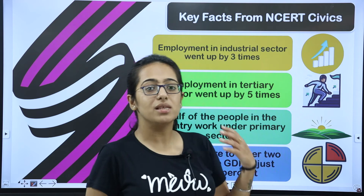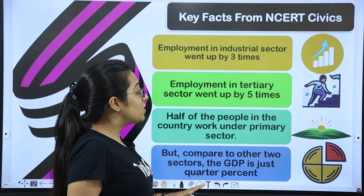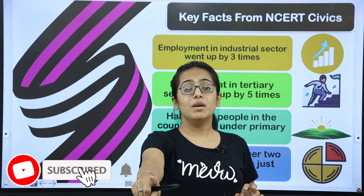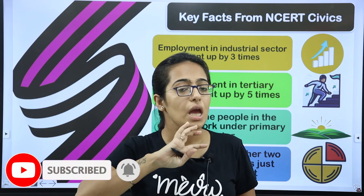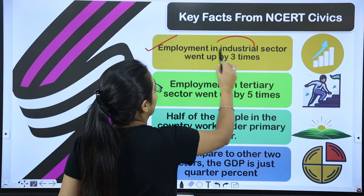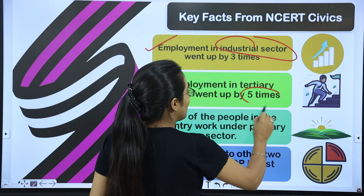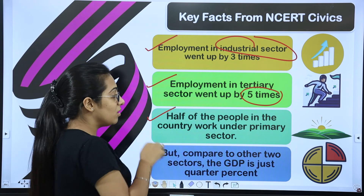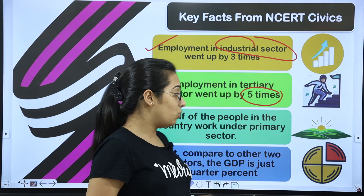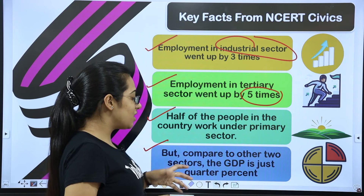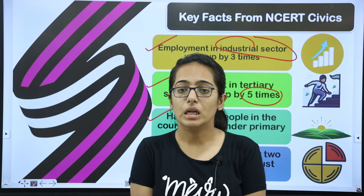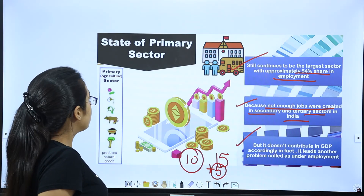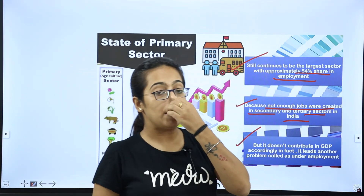Some key facts from NCERT: the industrial sector has grown three times in employment, while the tertiary sector has grown five times in employment. However, half of the people in the country are still in the primary sector. Despite this, compared to the other two sectors, the primary sector's contribution to GDP is just around a quarter. The tertiary sector's GDP performance is not so good either.